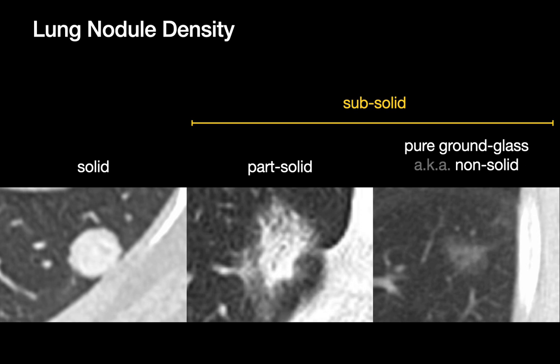Next item: lung nodule density. When we look at and describe the density of a lung nodule, we tend to categorize them in terms of one of three density types: solid nodules, ground glass or non-solid lung nodules which are basically see-through, and part-solid lung nodules which have both ground glass and solid components. It's not uncommon to refer to part-solid and pure ground glass nodules together as sub-solid.